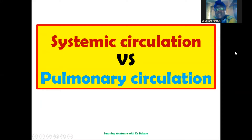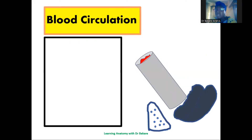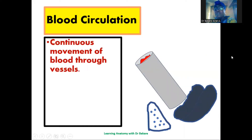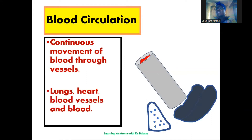Welcome. Let's look at the systemic circulation versus the pulmonary circulation. Blood circulation generally is the continuous movement of blood through the vessels. For the circulatory system to be established, a number of organs are involved, and these include the lungs.